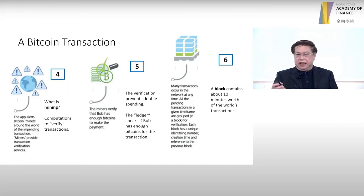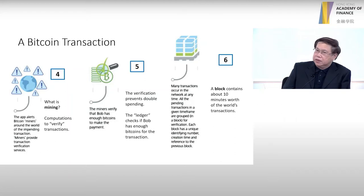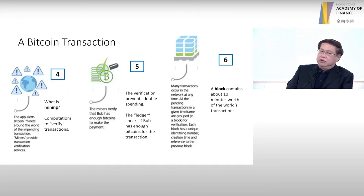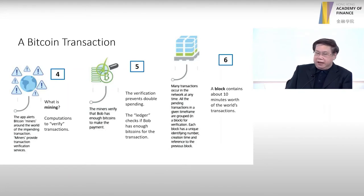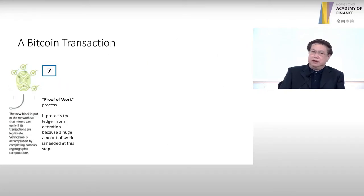If there are more transactions and blocks are being created slower, the cryptographic game will adjust itself to make it easier. If the block is being created faster, the game will make it more difficult. So there is a self-adjusting cryptographic game — that's what we call proof of work. The miners work together, putting transactions in and creating the block.